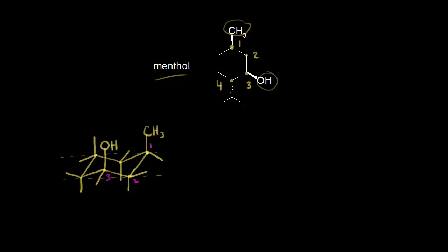Finally we have our isopropyl group at carbon four, and this is a dash, so it's going away from us in space, or down relative to the plane of the ring. The isopropyl group must be going down relative to the plane of the ring, which means it's axial again — that's the only one that's going down. So let's draw in our isopropyl group at carbon four. That's one chair conformation for menthol.